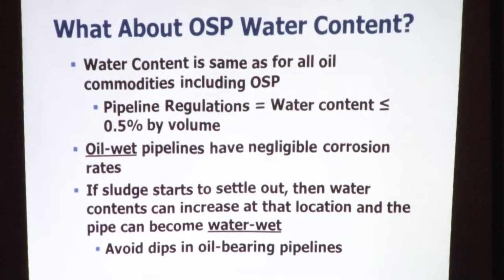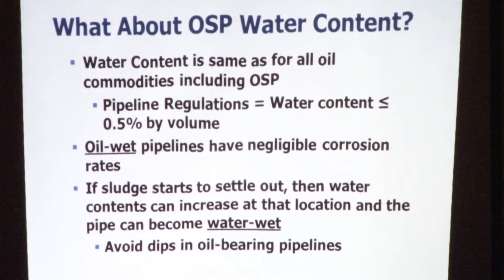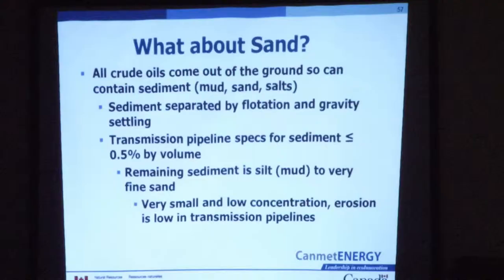What about the water content? By law, pipelines cannot ship anything that has more than 0.5% water by volume. When you have an oil-wet pipeline, you're not going to get corrosion. But when you have water next to the pipeline wall, you are going to get corrosion. Where you see internal corrosion is usually where there's a dip in the pipeline, because the petroleum is lighter and the water is heavier, so the water sinks down to the bottom of the dip. In a transmission pipeline, by regulation, you also have to have less than or equal to 0.5% by volume of sediment.